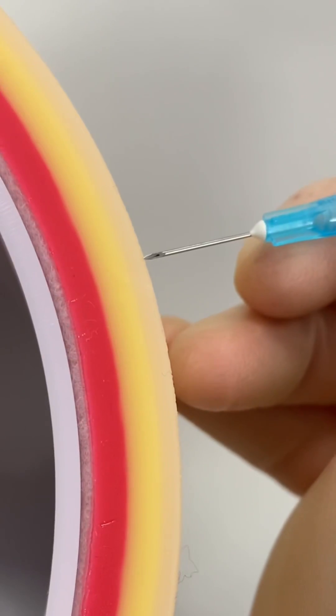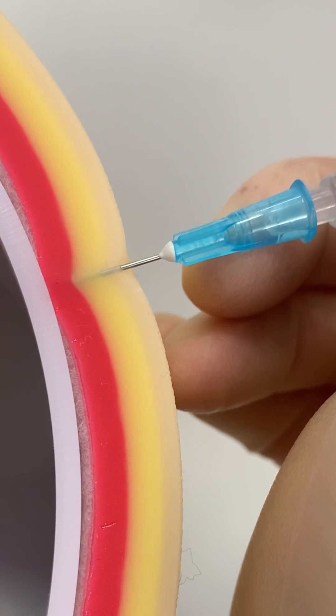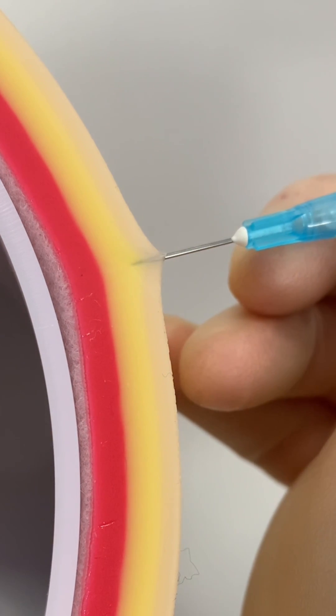Intramuscular injections are made by entering at a 90 degree angle and administering the medication deep in the muscle. Muscles have an excellent blood supply that can absorb the medication very quickly.